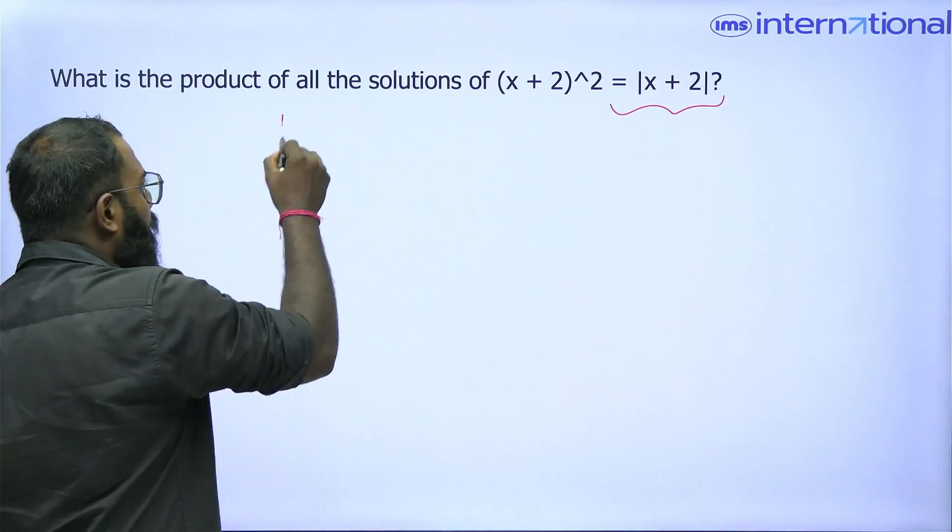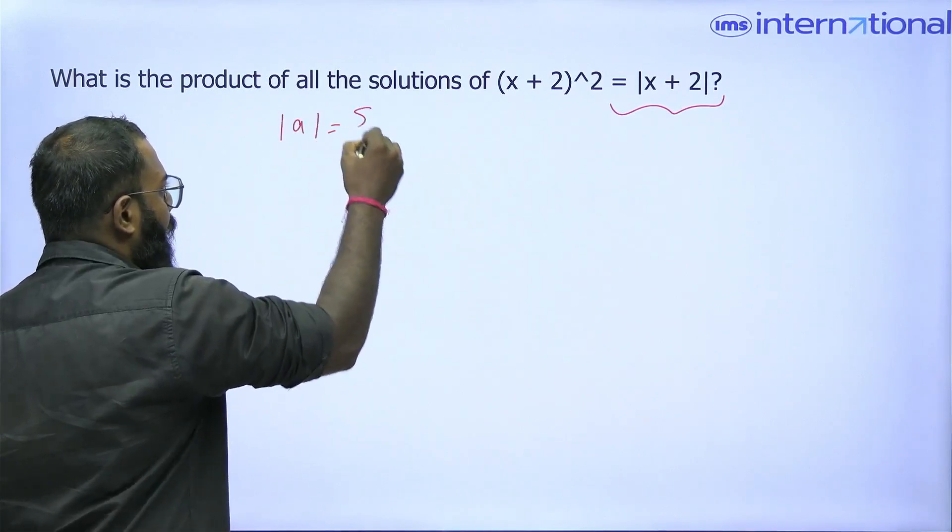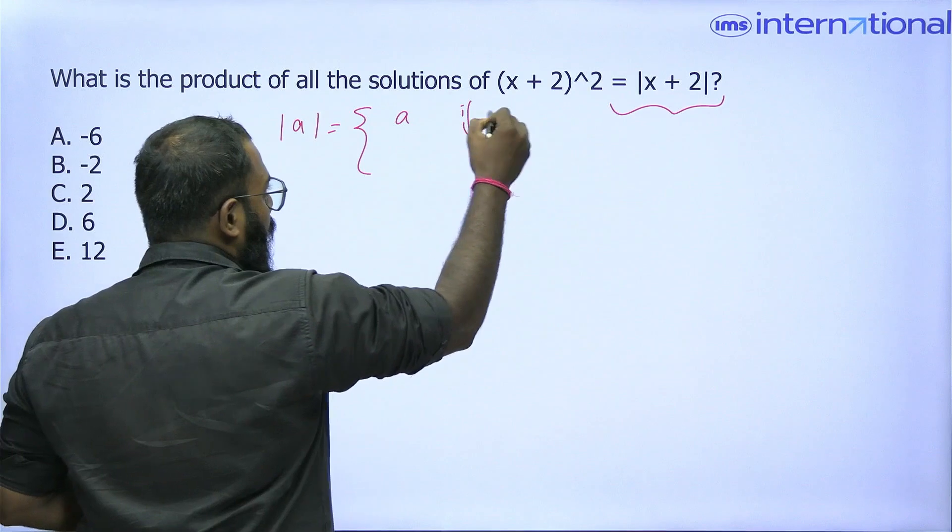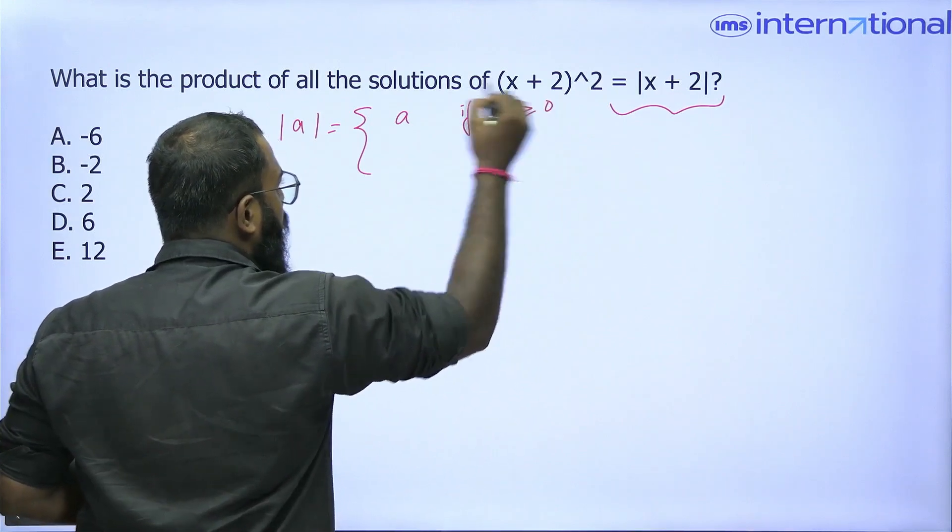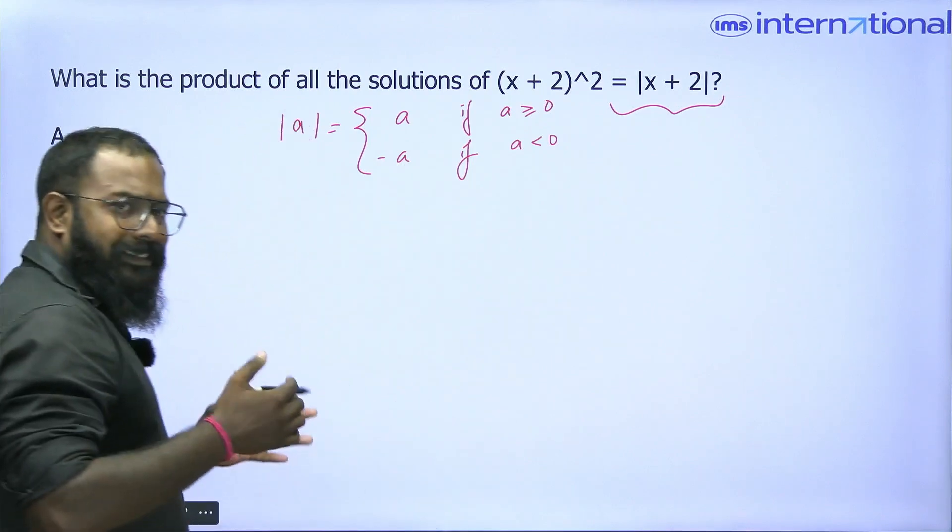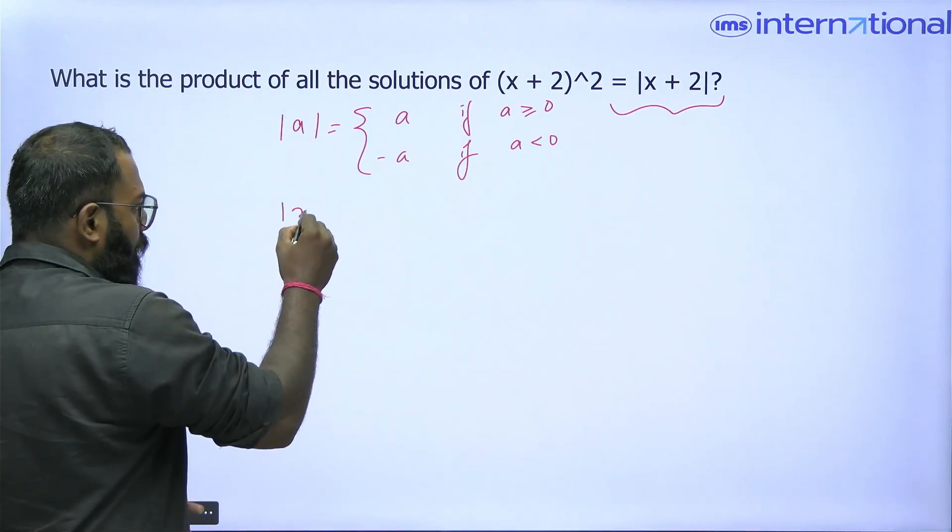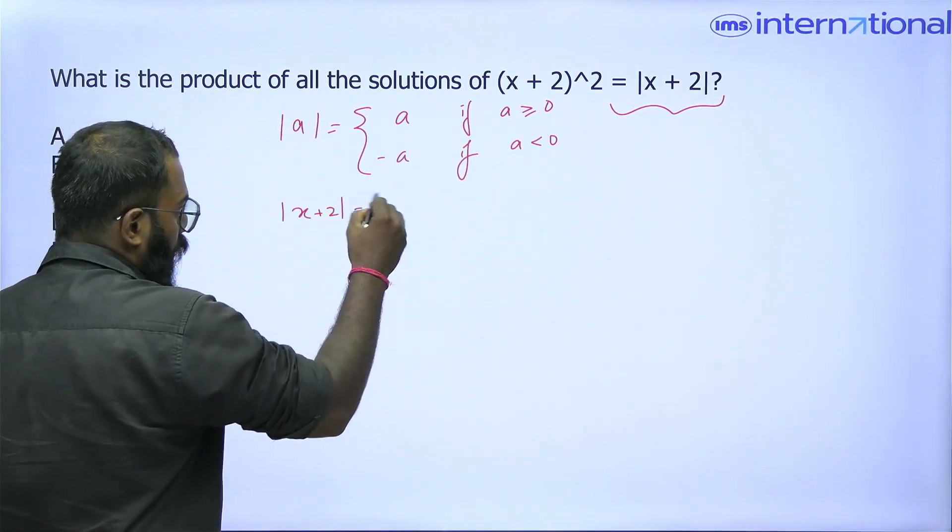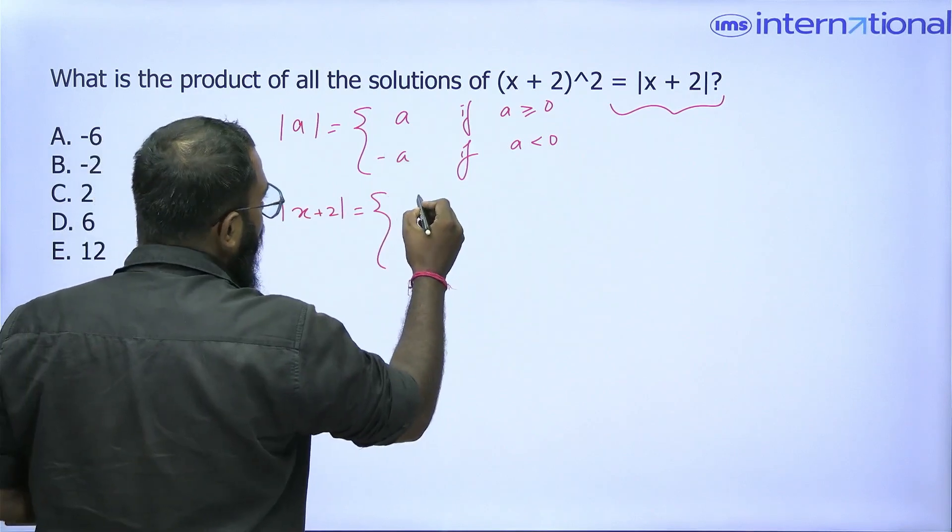So what is mod of a? Mod of a is defined as a if a is greater than or equal to 0, and minus of a if a is less than 0. On the same line, I can say that mod of x plus 2 will also be defined in two different ways.